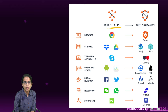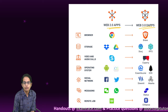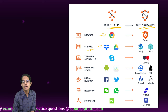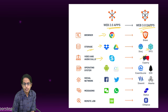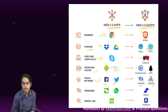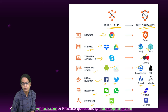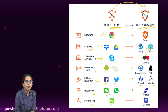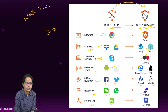Comparing Web 2.0 versus Web 3.0 apps: browsers go from Chrome to Brave; storage from Google Drive to IPFS; video calls from Skype to Experty; operating systems from iOS to Essentia and EOS; social networking from Facebook and Twitter to Steemit and Akasha; messaging from WhatsApp to Status; and remote jobs from Upwork to Ethlance. Those are good examples of a switch between Web 2.0 and 3.0.